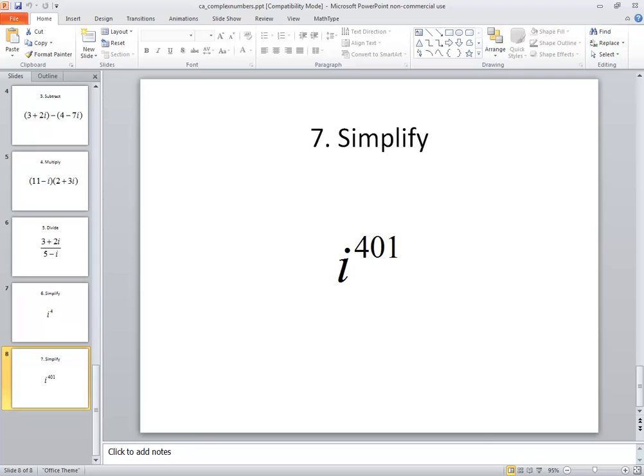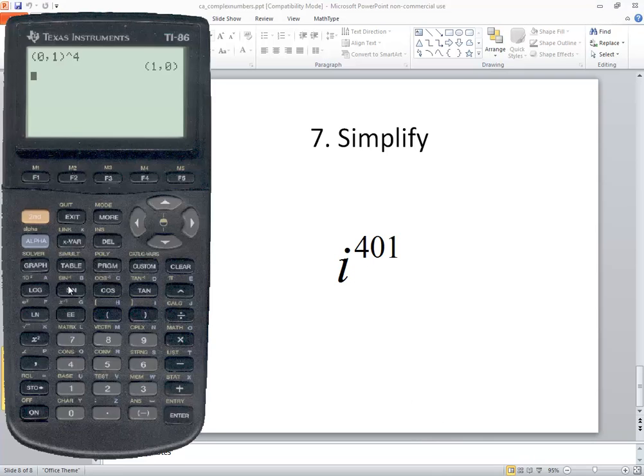Now this one. We want i to the four hundred and first power. Do beginning parenthesis, zero, comma, one, closing parenthesis, caret, four hundred and one, then press enter. This is our real part and our imaginary part. This says zero plus one i, or zero plus i, or just simply i. So our answer is i in that problem.